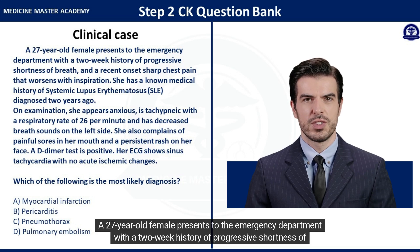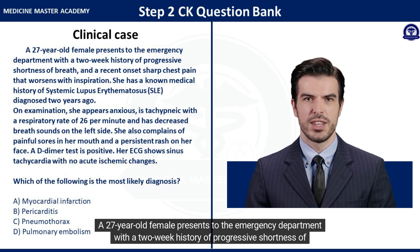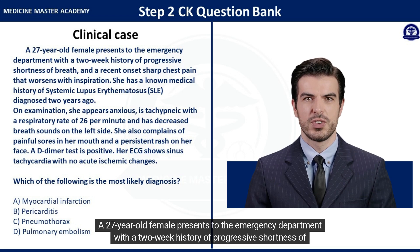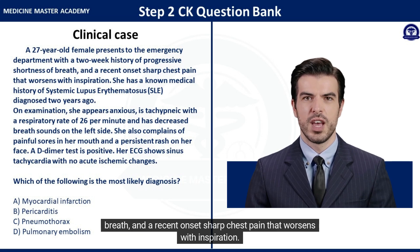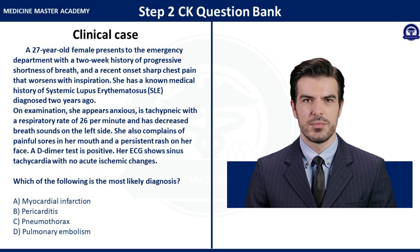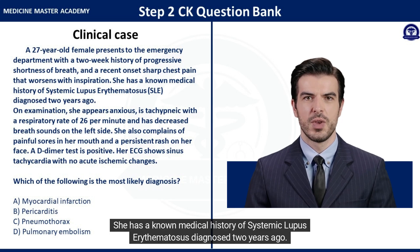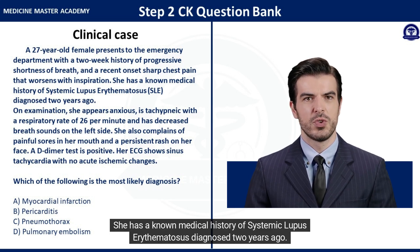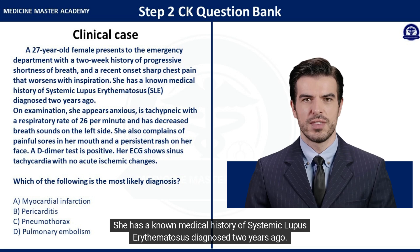A 27-year-old female presents to the emergency department with a two-week history of progressive shortness of breath and a recent onset of sharp chest pain that worsens with inspiration. She has a known medical history of systemic lupus erythematosus diagnosed two years ago.